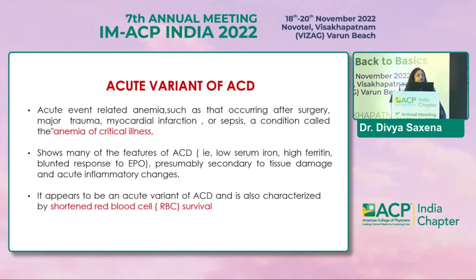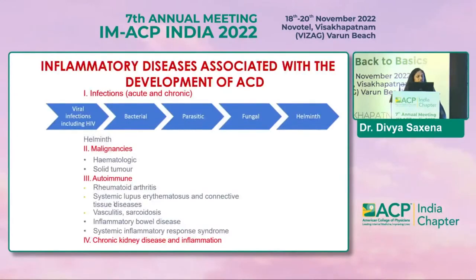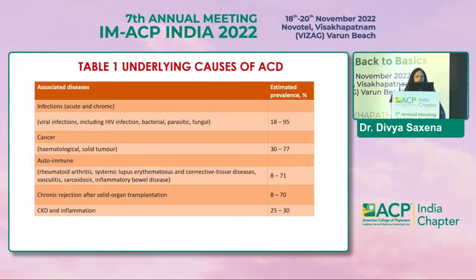Various inflammatory diseases may be associated with anemia, including infections such as most viral infections including HIV, bacterial infections, parasitic, fungal, or helminths; malignancies such as hematological malignancies or solid tumors; autoimmune diseases like rheumatoid arthritis, systemic lupus, and connective tissue diseases; vasculitis, sarcoidosis, inflammatory bowel disease, systemic inflammatory response syndrome, and chronic kidney disease with inflammation. The prevalence among infectious diseases is almost 18 to 95%, in cancer patients 30 to 77%, in autoimmune disease 8 to 71%, in solid organ transplant patients 8 to 70%, and in CKD with inflammation 25 to 30%.